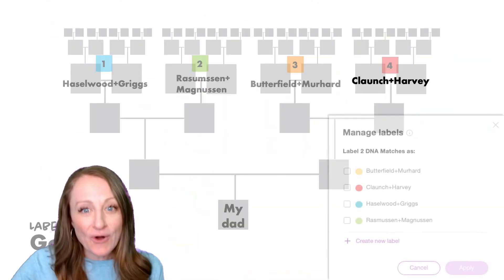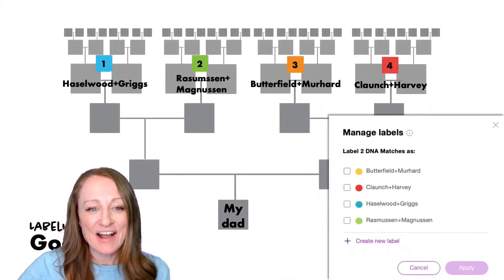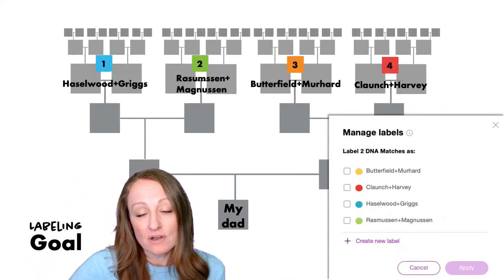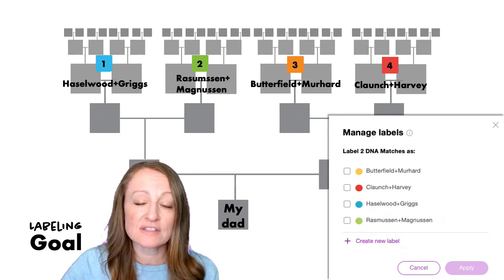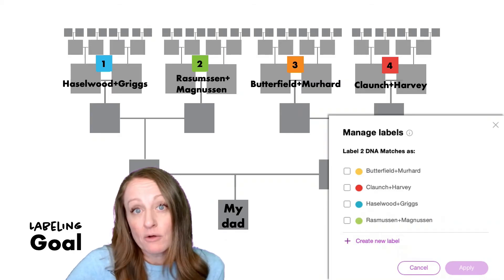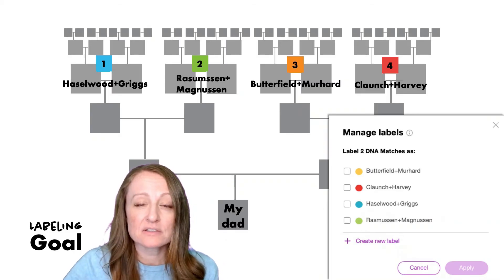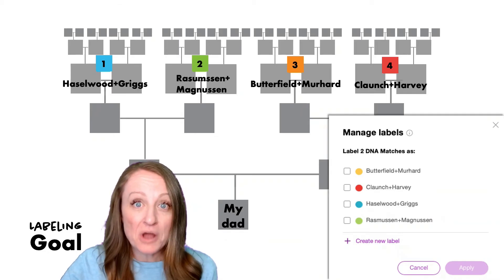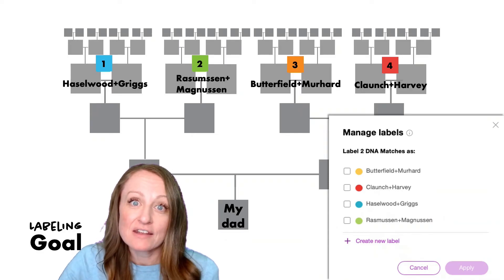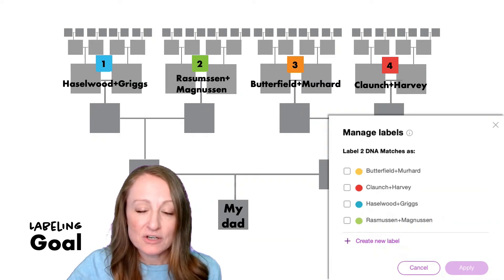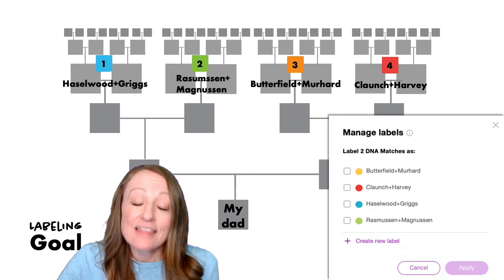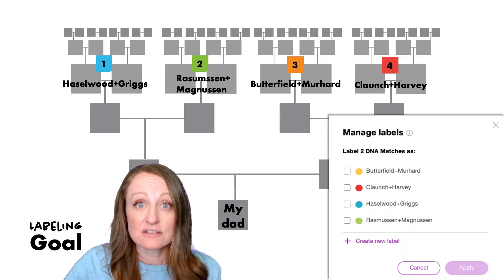Your labeling goal is to label all of your matches, perhaps according to these four groups you've decided on. If I was doing this for my dad, I know all of his great-grandparents, so I can label all of the matches according to those four great-grandparent couples. If you don't know all of yours, do the best you can and use the labels to mark the matches you do know your relationship with. Then, what you'll have left over are matches with no label, and these matches are likely related to the lines you're most interested in researching.